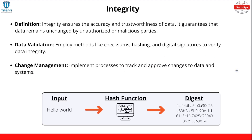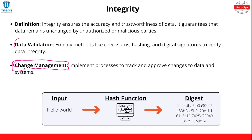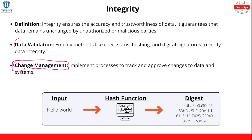Now let's go over integrity. Integrity ensures the accuracy and trustworthiness of data — it guarantees that data remains unchanged by unauthorized users or malicious parties. We're going to cover two main concepts: data validation and change management. Change management is about ensuring your enterprise processes have integrity — that your development, DevOps, or IT operations teams have a system ensuring a tier-one developer can't make production-level changes.